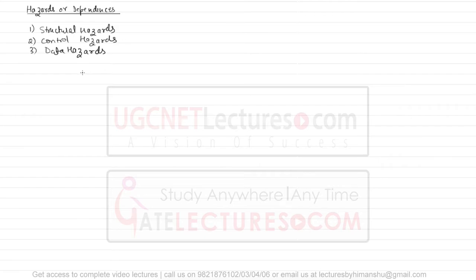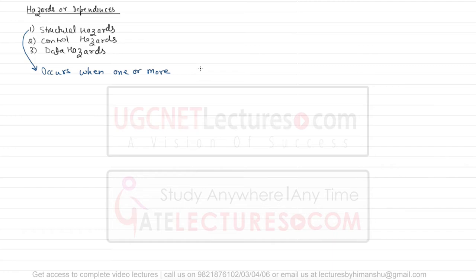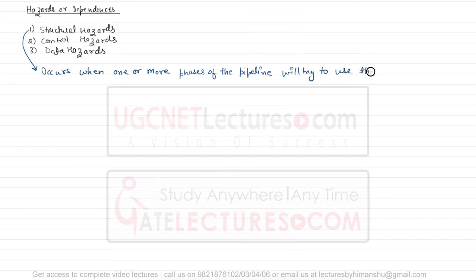We are going to see these hazards one by one, starting with structural hazards. Structural hazards mainly occur when one or more phases of the pipeline try to use the same resource. Control hazards generally occur when there are resources that lead to an unpredictable state.